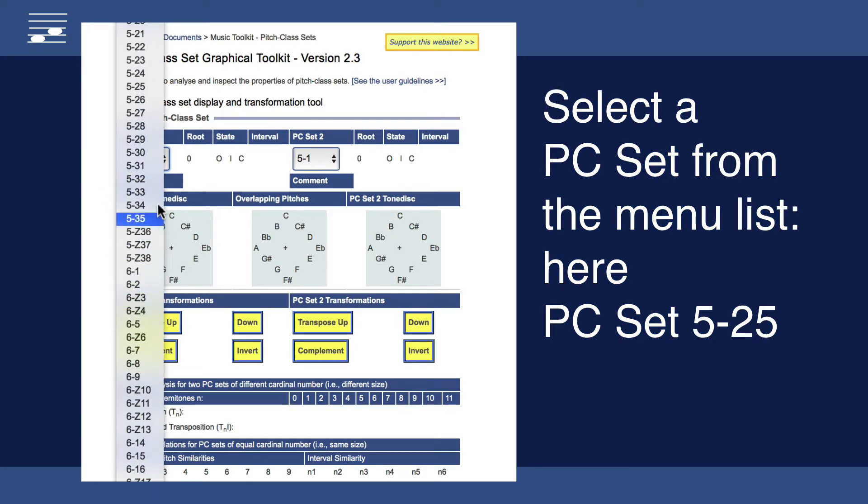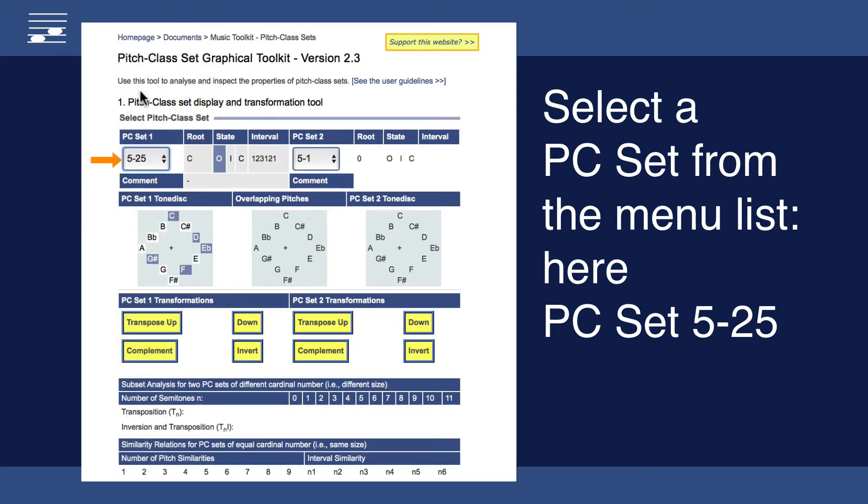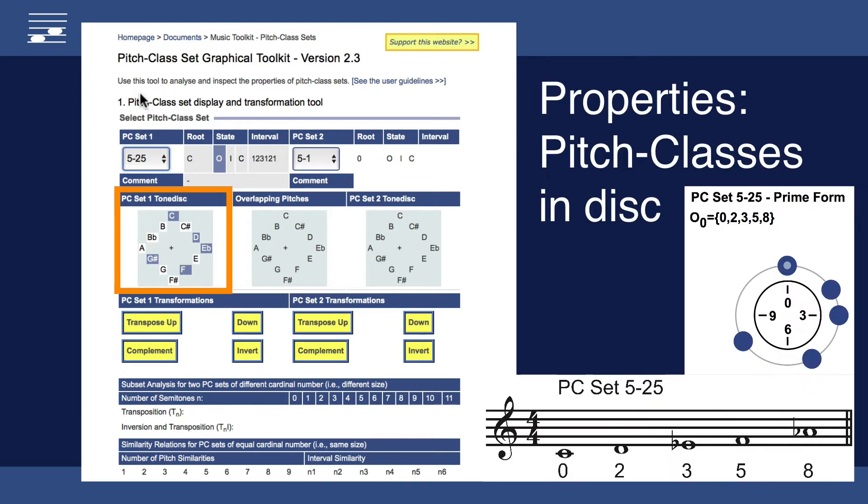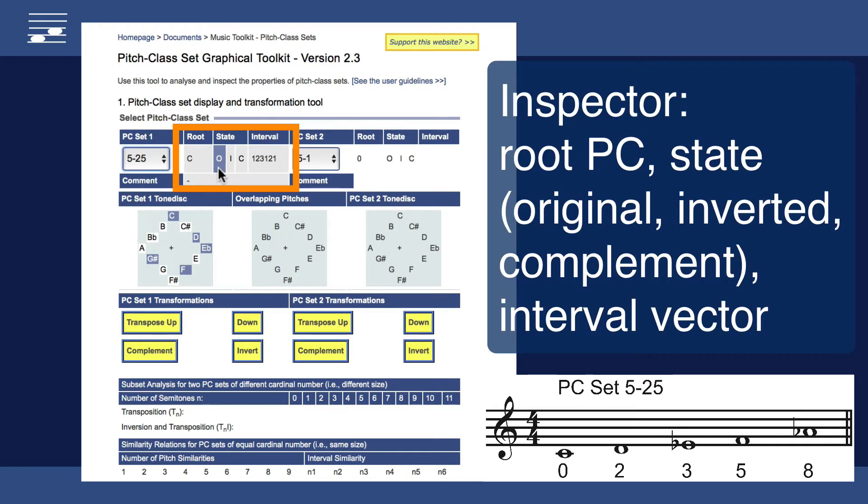Select the example set 5-25. The pitch disk diagram shows the five pitch names according to the prime form. The inspector shows other pitch class set properties such as the root C and the highlighted O indicating the original form with clockwise pitch orientation.